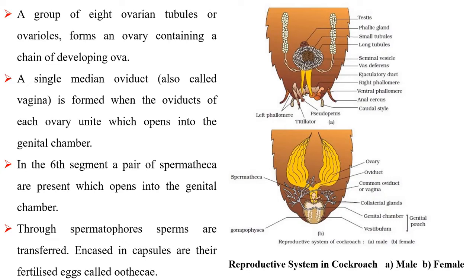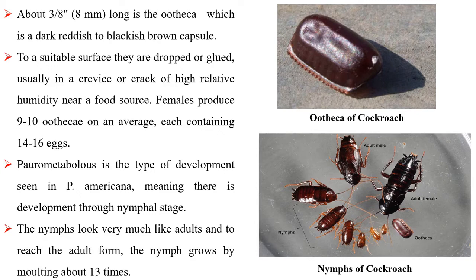About three-eighths of an inch long is the ootheca, which is a reddish, dark and blackish-brown capsule. They are dropped or glued to a suitable surface, usually in a crevice or crack of high relative humidity near a food source. Females produce 9 to 10 oothecae on average, each containing 14 to 16 eggs.